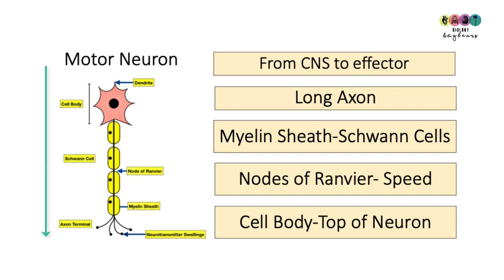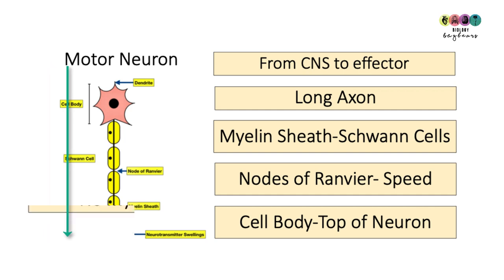It has the myelin sheath produced by those Schwann cells, and the gaps between the myelin sheath are the nodes of Ranvier, which speed up the transmission of the impulse. Note the position of the cell body — it's on top of the neuron — and don't forget to draw your arrow going downwards from the cell body.